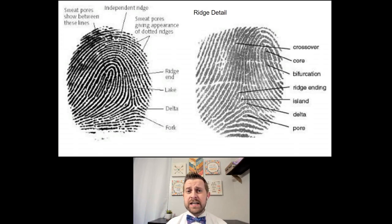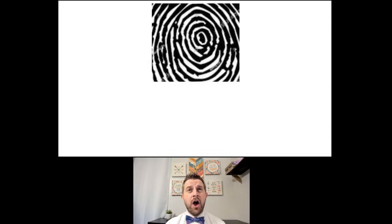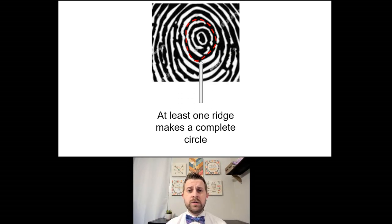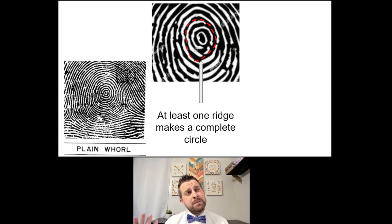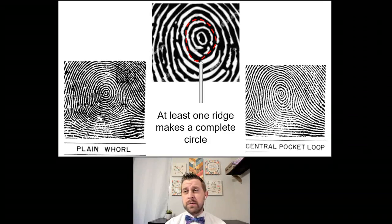Only then can you tell what the culprit left behind. Look there's a whirl, at least one ridge goes all around. That means it can be plain, I won't complain, or could be central pocket.